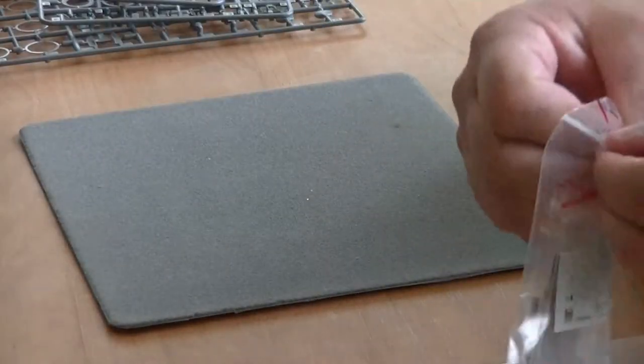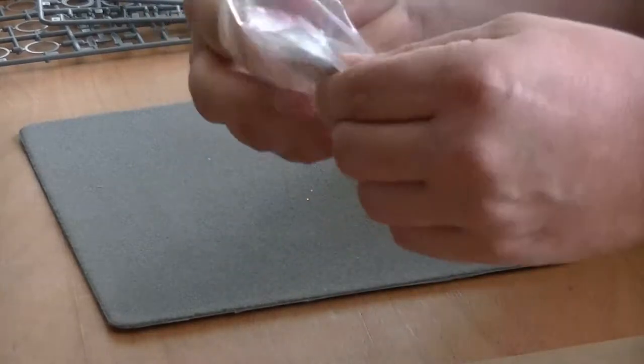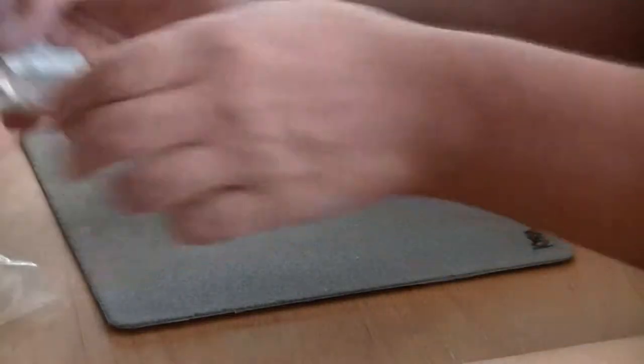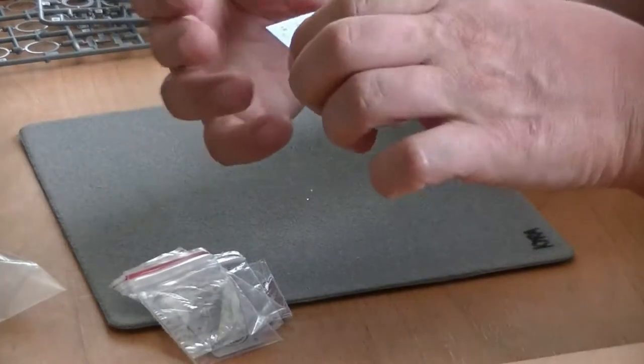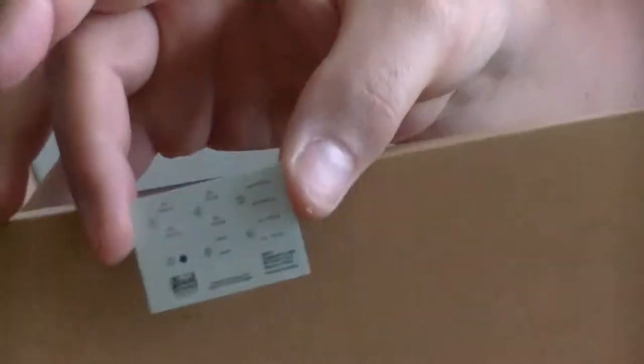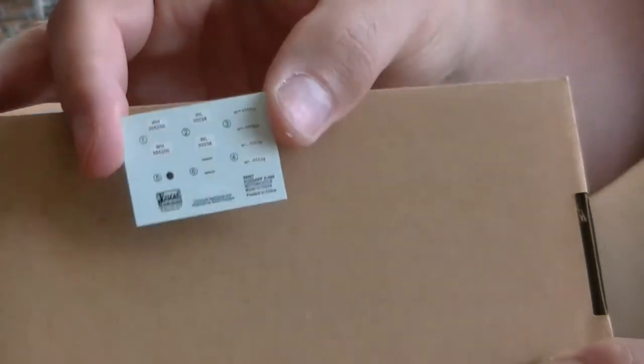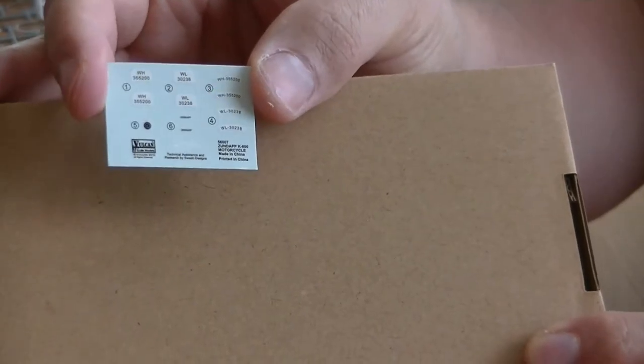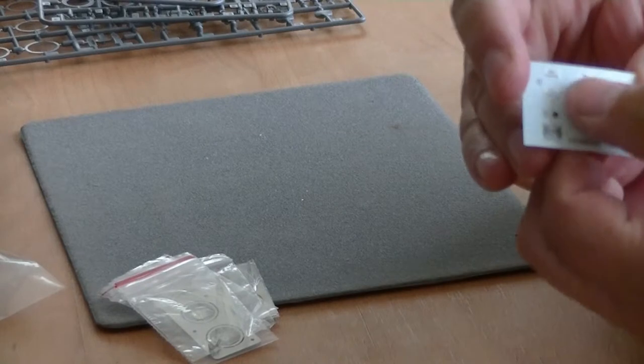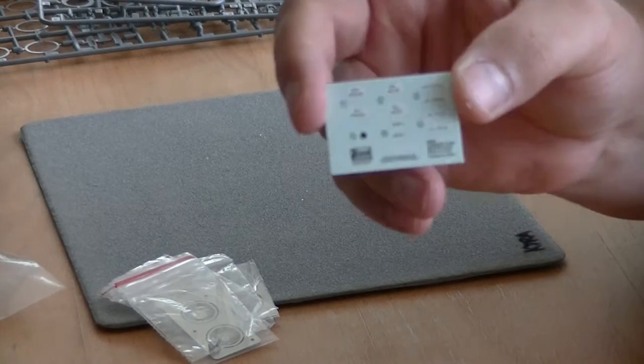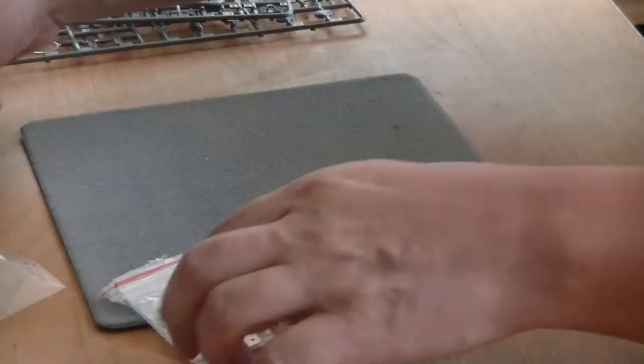And let's open this small bag here, which contains the decal sheet. It's a small sheet with two versions, Wehrmacht and Luftwaffe. They are a little bit thick and also a little bit on the yellow side. Not great.